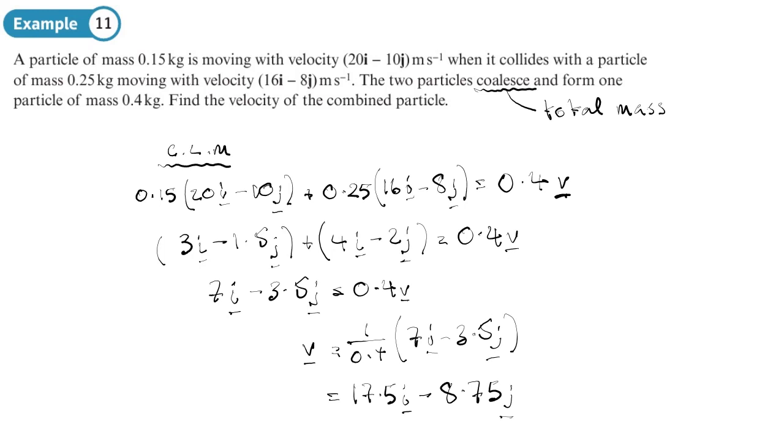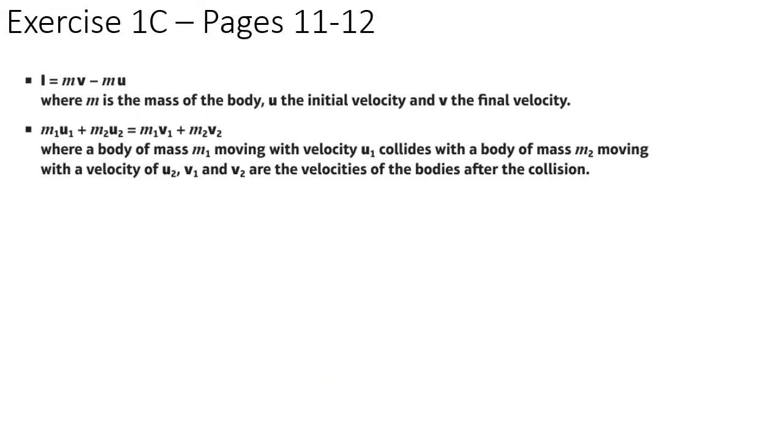So v is going to equal 7i minus 3.5j divided by 0.4. Let's work out what that is. 7 divided by 0.4 is 17.5i, and negative 3.5 divided by 0.4 is minus 8.75j. So there we go, that's the velocity of the combined particles: 17.5i minus 8.75j meters per second.